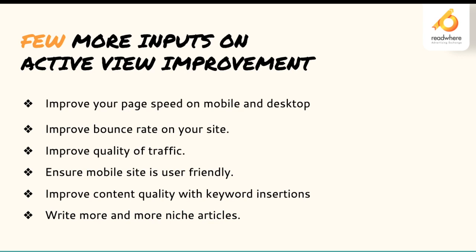Regarding balancing viewability from Google Ad Manager and third-party trackers — ensure your mobile site is user-friendly, meaning it should be responsive or have an m-dot version that is mobile-first. Improve your content quality with keyword insertions — use niche keywords that are trending. Google Trends is a great example to understand what content is trending, which improves the attention span of the user. Write more and more niche articles, as publishers doing this are gaining from AdSense and Discover.